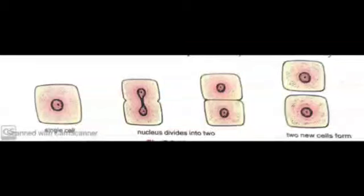That means they exist in 23 pairs. So in this process of mitosis, the number of chromosomes remains same as in the parent cell.